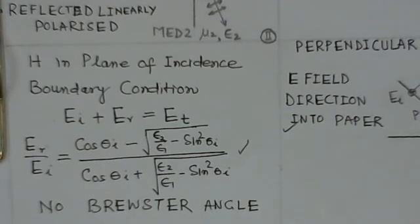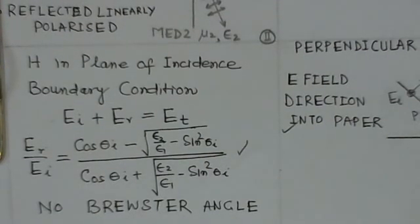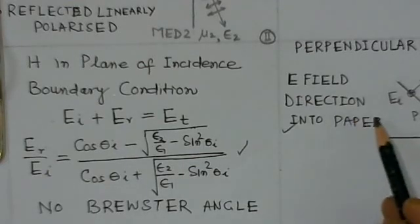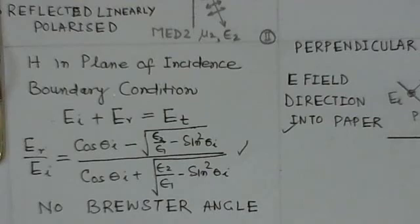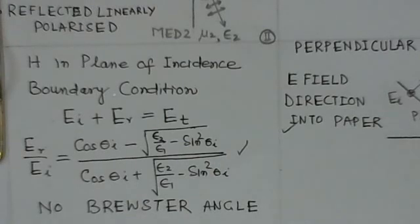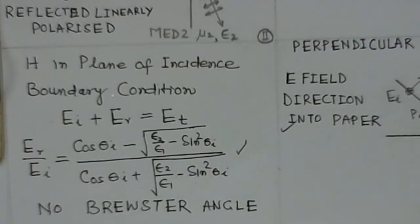Please note that there is no existence of Brewster's angle for perpendicular polarization. The wave is always reflected. The Brewster angle occurs only in the case of parallel polarization; there is no Brewster's angle for perpendicular polarization.